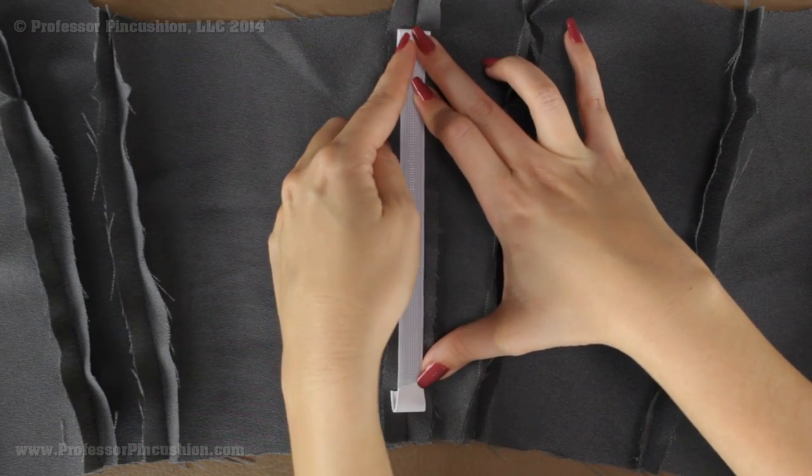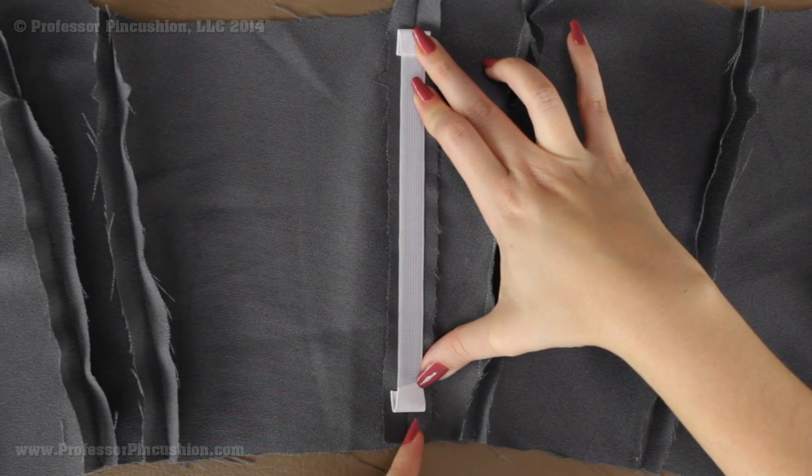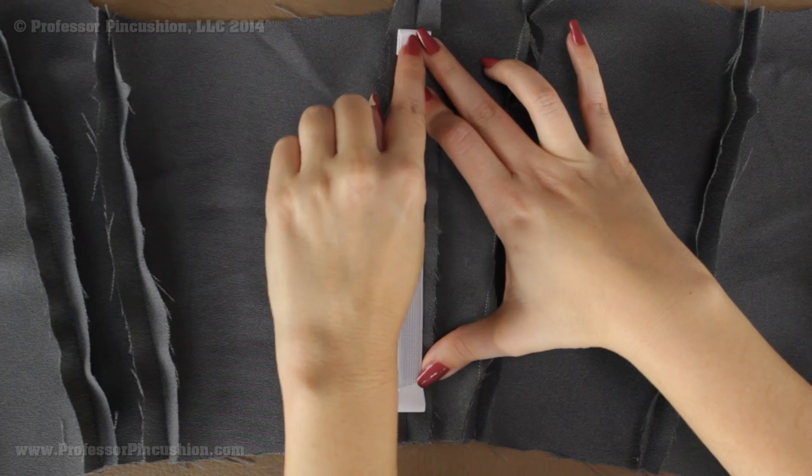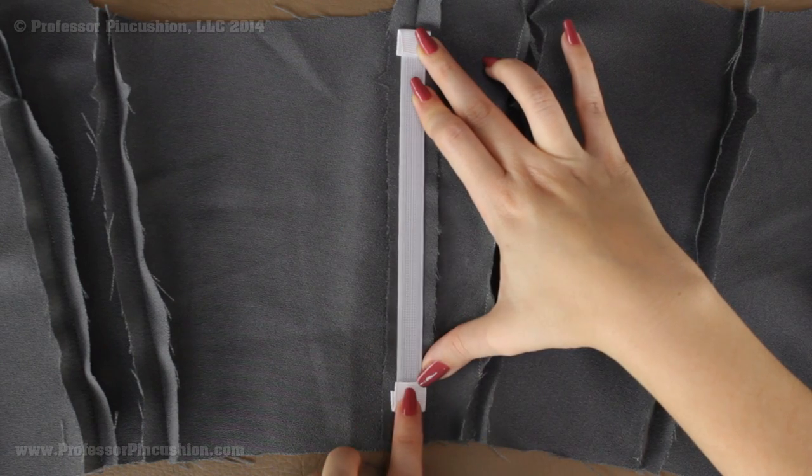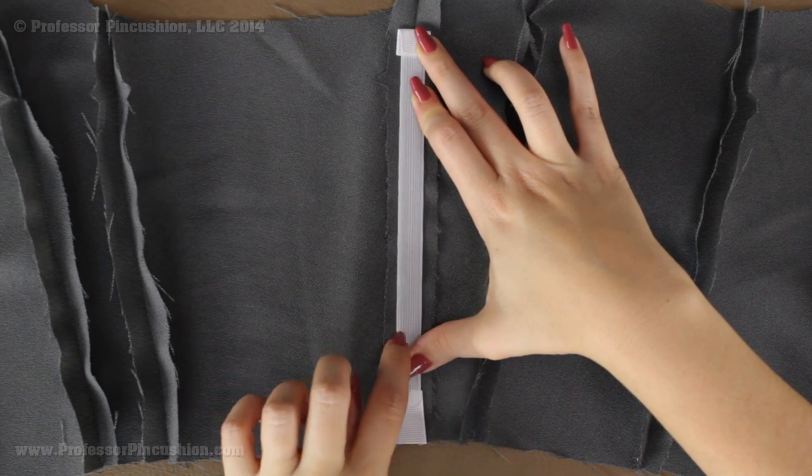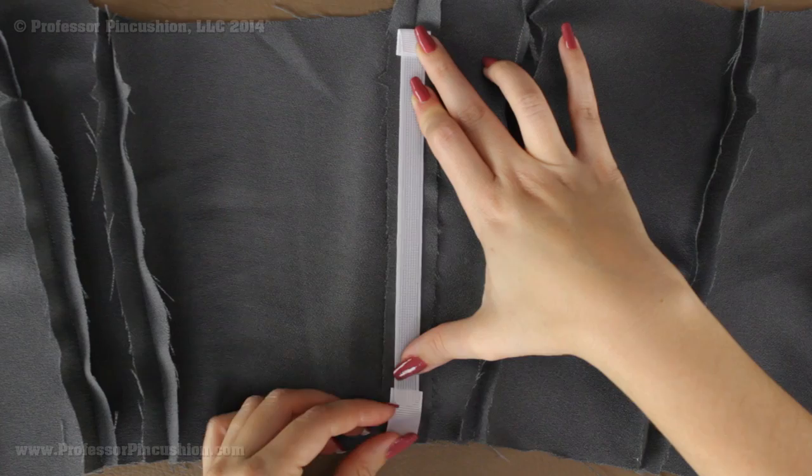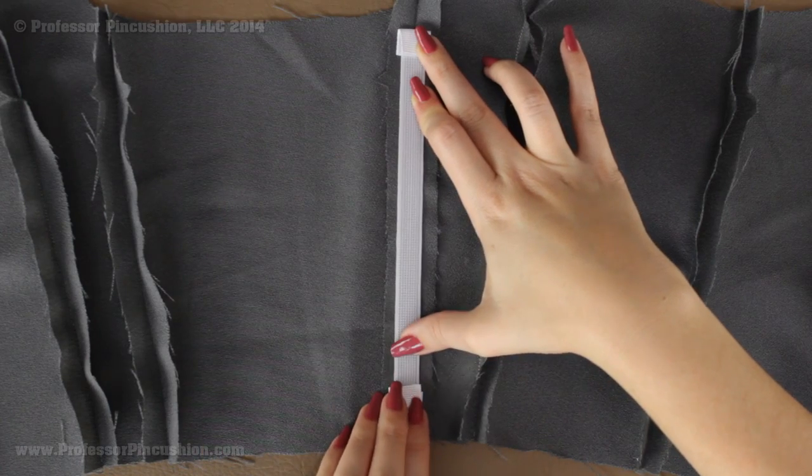And then all you're going to do is you're going to sew a perimeter stitch around the boning. So I'm going to go across the ends, down the side, across the end and then up the other side as well. Because this is really thick, you might want to use a heavier needle just so it goes through it a little bit easier.